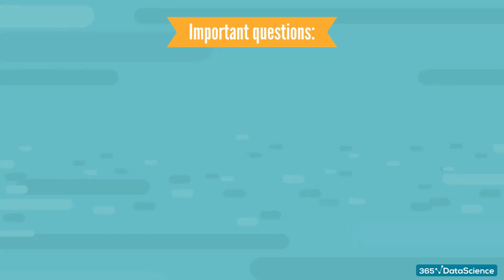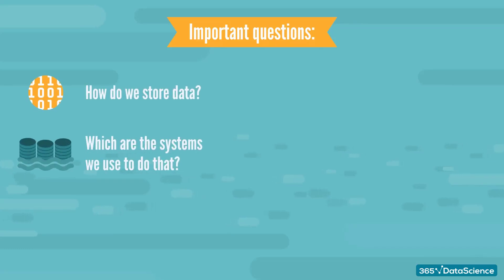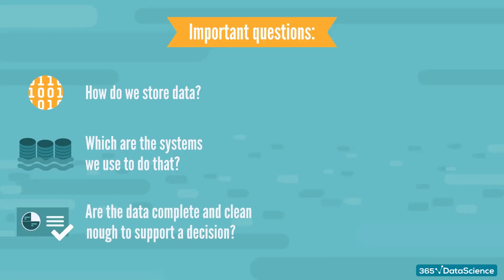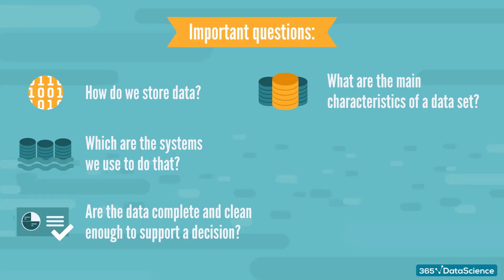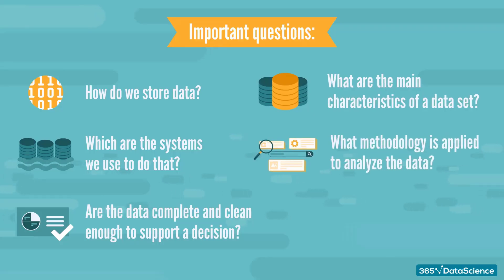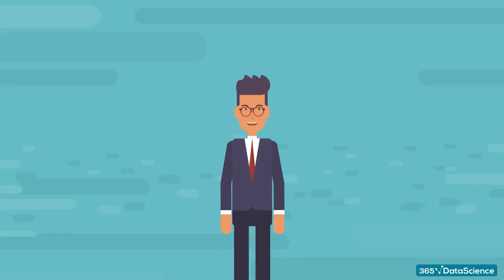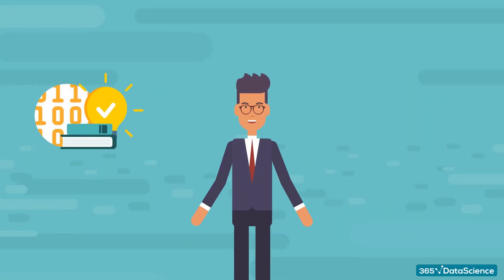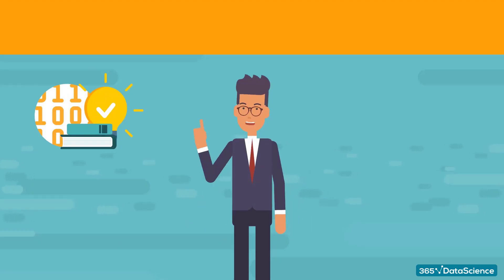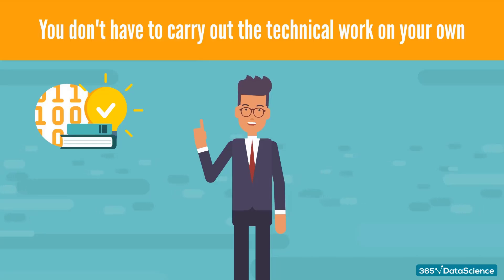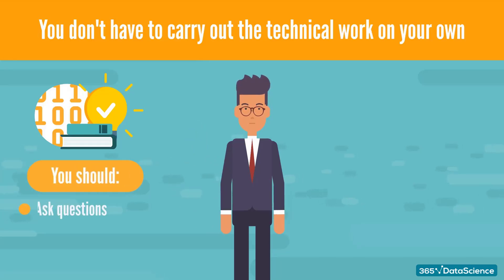Some of the most important questions a data literate person should be able to answer are: How do we store data? Which are the systems we use to do that? Are the data complete and clean enough to support a correct decision? What are the main characteristics of a data set? What methodology was applied to analyze the data? How reliable is the result of an analysis or forecast? If you're a data literate person, you should have an idea about each of these aspects. This doesn't necessarily mean you have to know the specifics of carrying out the technical work on your own — still, you should be knowledgeable enough to understand the architecture of the whole process.